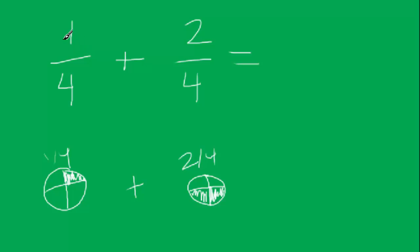Okay, so now all I really have to do is go one plus two equals three, and that is going to be over four. We keep the four because we still are comparing it to the four slices. So we have one fourth plus two fourths equals three fourths.